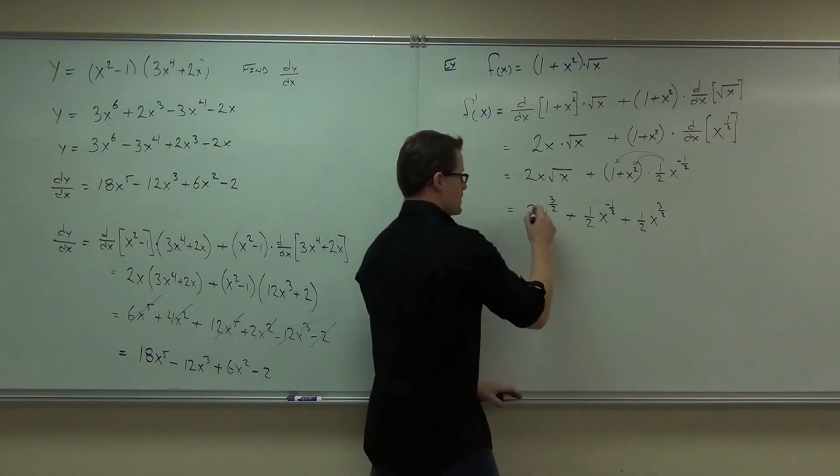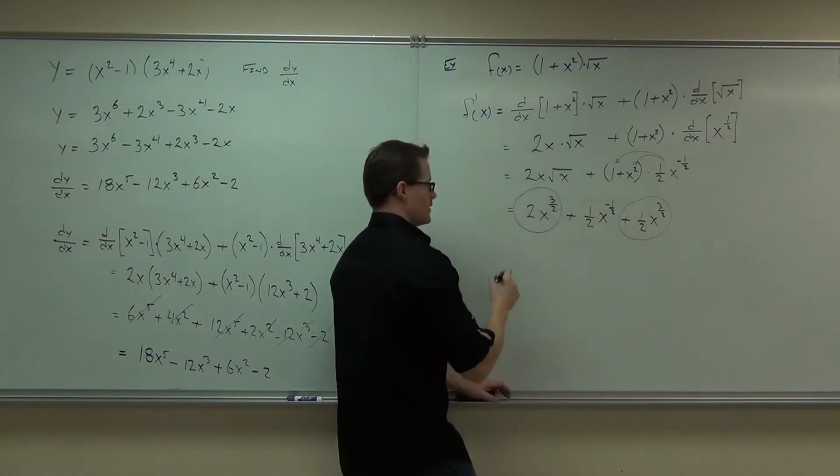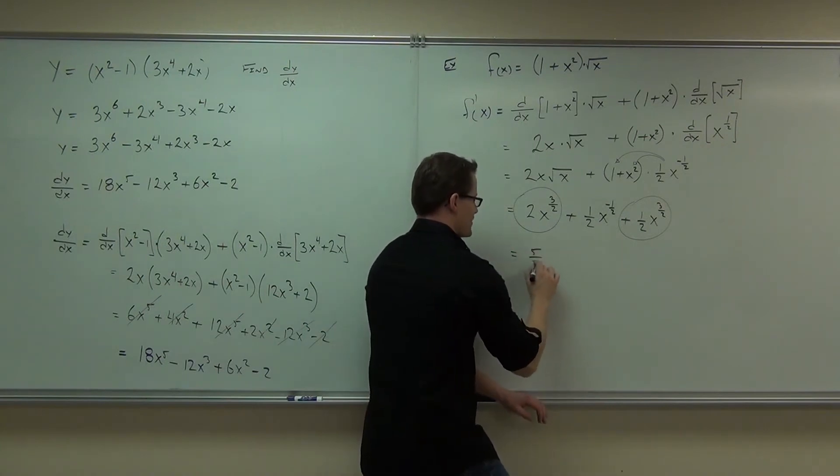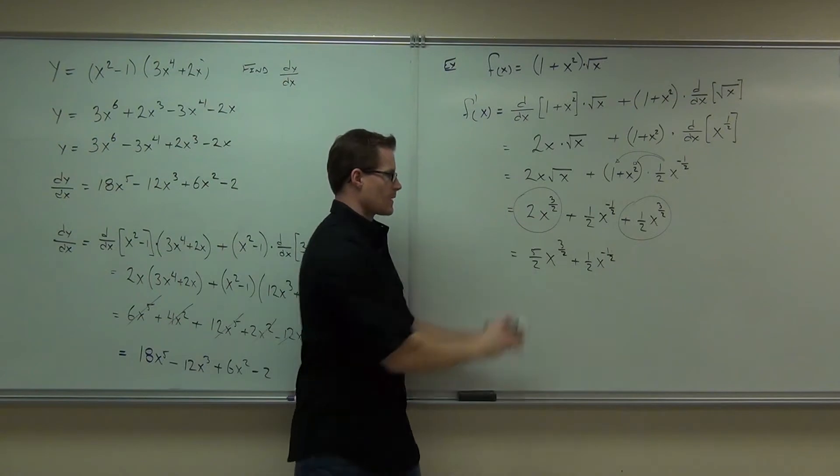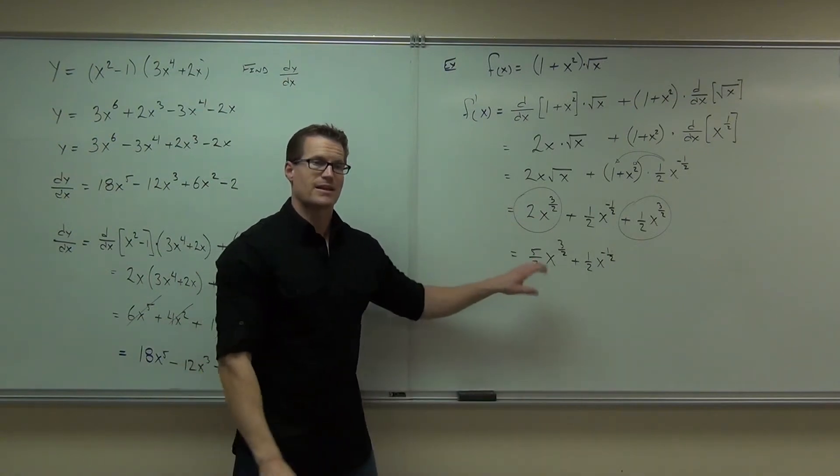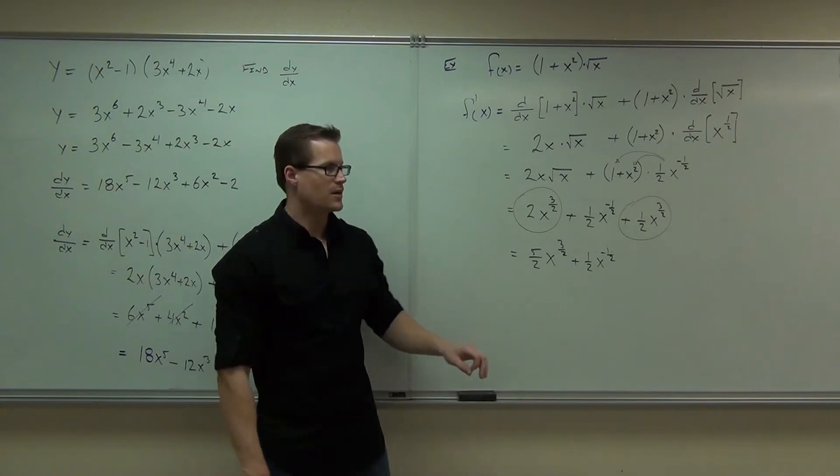That's the 3 halves for you. So I've just distributed and distributed. 1 half x to the negative 1 half. And then 1 half. The x squared and the x to the negative 1 half gives you the x to the 3 halves. Are you all right with that? Then you could combine these as well. Because you'd end up with like 5 halves over x to the 3 halves. 5 halves x to the 3 halves, plus 1 half x to the negative 1 half.